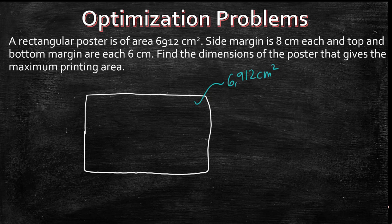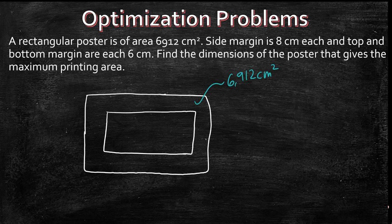Now the side margins is 8 centimeters each and top and bottom margins are each 6 centimeters. So imagine there is a secondary area in here.